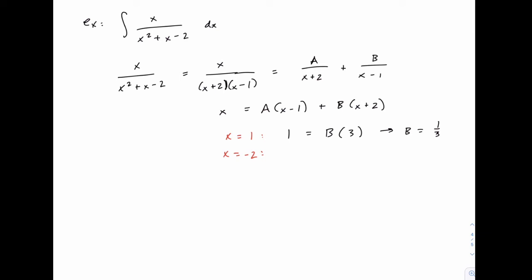Similarly, when x equals negative 2, the left hand side will be negative 2 this time. On the right hand side, we'll have a times negative 2 minus 1 or negative 3 plus b times 0. So that disappears. And again, we can divide both sides by negative 3 to solve and find that a is 2 thirds.